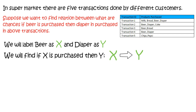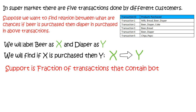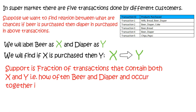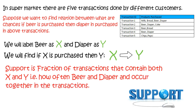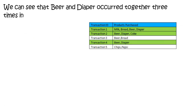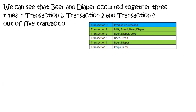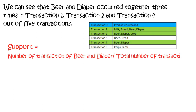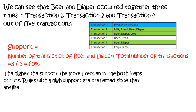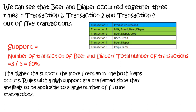We will calculate support first. Support is the fraction of transactions that contain both X and Y — that is, how often beer and diaper occur together in the transactions. In the table, beer and diaper occurred together three times: in transaction 1, transaction 2, and transaction 4, out of 5 transactions. So support equals the number of transactions with beer and diaper divided by the total number of transactions, which equals 60%. The higher the support, the more frequently both items occur together. Rules with high support are preferred since they are likely to be applicable to a large number of future transactions.